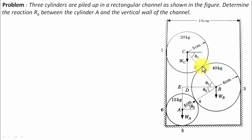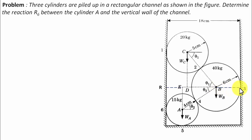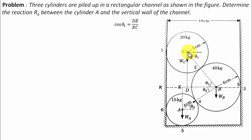To begin this problem, a whole lot of angles need to be calculated. We start with theta1 and theta2. I'll do a little construction — extending the line from E towards the left to point R, and from B extending to the right to point S. For theta1, we use cos(theta1) = base BD / hypotenuse BC. The hypotenuse BC is 6 + 5 = 11.